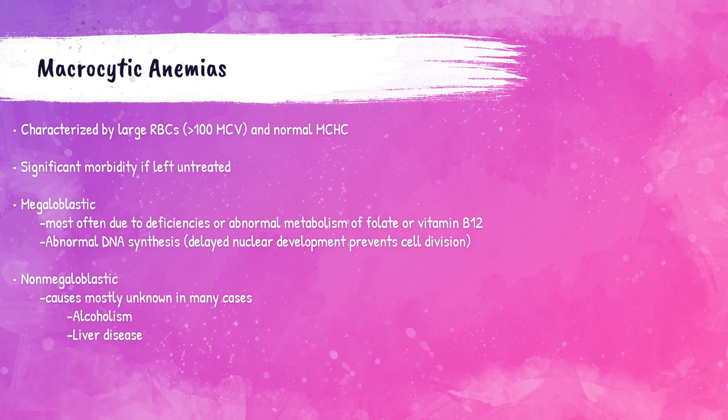So what is a macrocyte? It's a red blood cell that is abnormally large. If we describe a red blood cell as normocytic, they're normal size. If microcytic, they're smaller than normal. So macrocytes are larger.